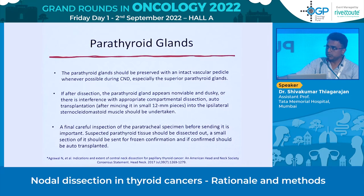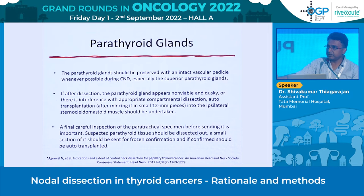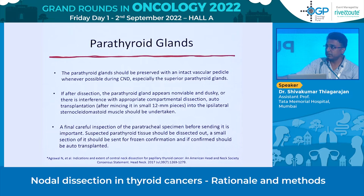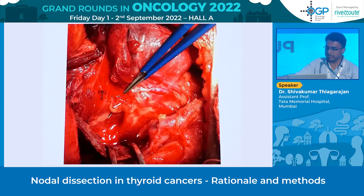The main issue in the debate about central compartment dissection is the parathyroid glands and the recurrent laryngeal nerve — more so the parathyroid glands because of hypocalcemia risk. When doing a central compartment dissection, we need to identify the parathyroid glands and save them with their vascular pedicle whenever possible. If a parathyroid gland appears non-viable at the end of dissection it must be removed and auto-transplanted. If unable to identify, inspect the specimen, confirm with frozen section, and auto-transplant in the sternocleidomastoid muscle — these glands regain function over a few weeks post-operatively.